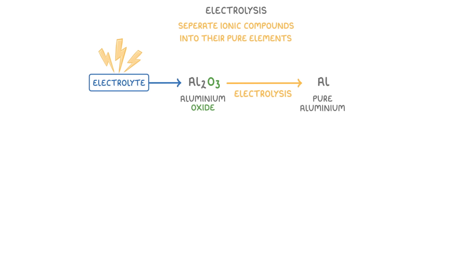As you saw in the last video, electrolysis is a process by which we can separate ionic compounds into their pure elements, by passing an electric current through an electrolyte. So if our electrolyte was aluminum oxide, then we could use electrolysis to split it into pure aluminum and oxygen.